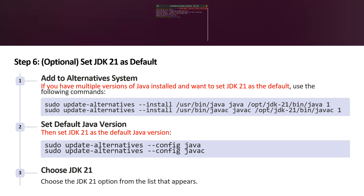Step 6 is optional, which is to set JDK 21 as the default. If you have multiple versions of Java installed on your Linux server and you want to set JDK 21 as the default, then use the following commands. When you execute these two commands, it will show the list of JDKs installed on your server, and from that, you have to choose JDK 21.